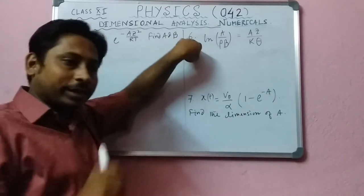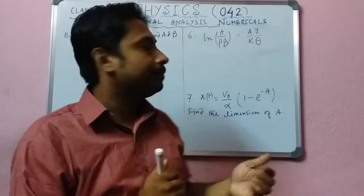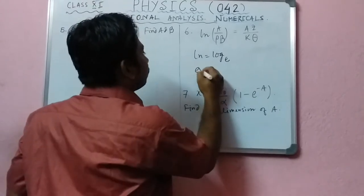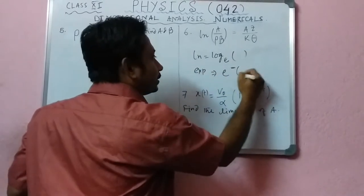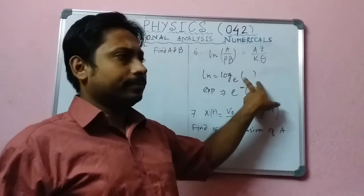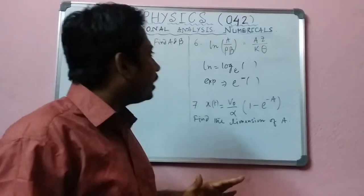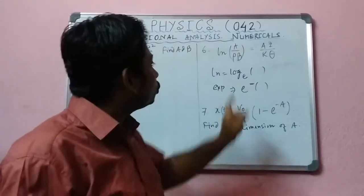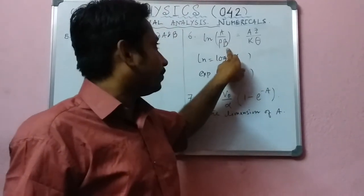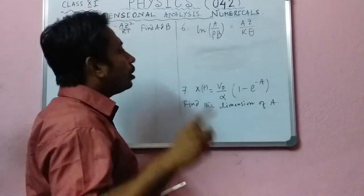In dimensional analysis, exponential means e to the power of something, and ln means logarithm — log base e. These functions, log or exponential, contain a pure number inside. That means inside the logarithm or inside the exponential, there is a pure number — a constant which has no dimension. So variables inside a logarithm have no dimension, which we write as M⁰L⁰T⁰.